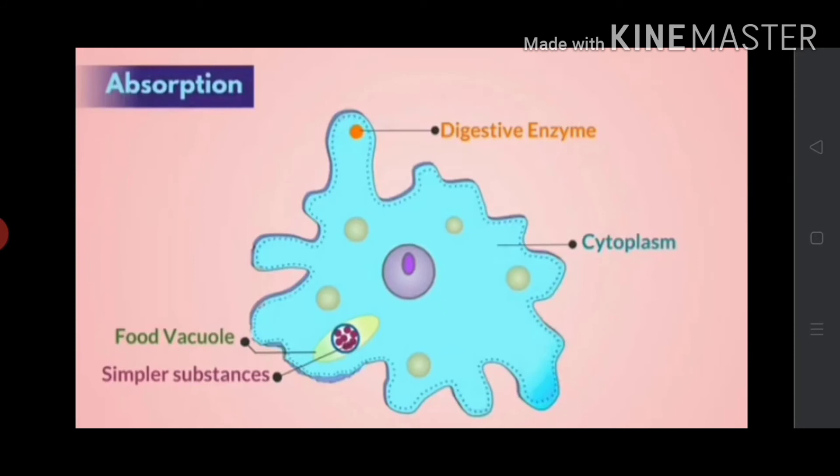These simpler substances then get diffused into the cytoplasm. This process is called absorption.